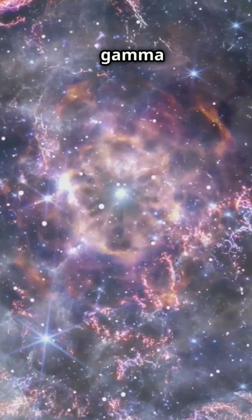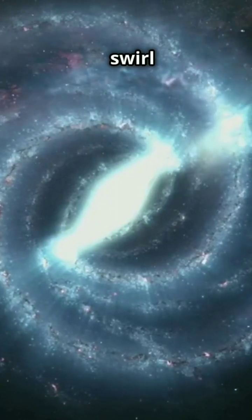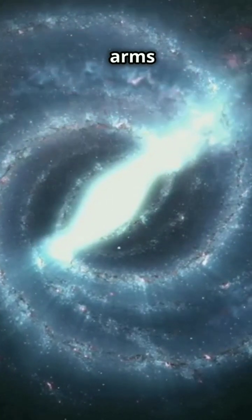These antimatter stars would burn through nuclear fusion, releasing energy as gamma rays and light. Galaxies would swirl much like ours do with spiral arms or elliptical shapes.